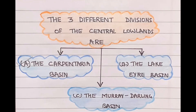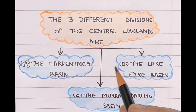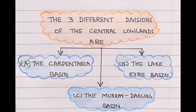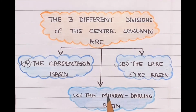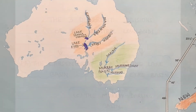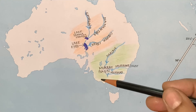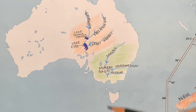After covering the two divisions, we will see the last one, that is C, the Murray-Darling Basin, which lies in the southern part of the central plain.